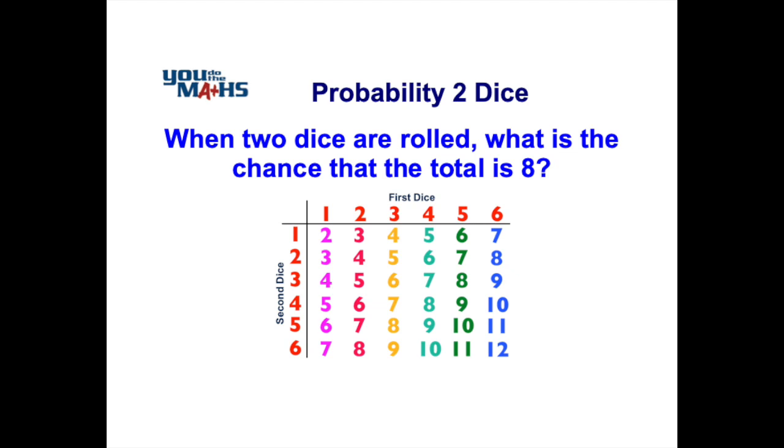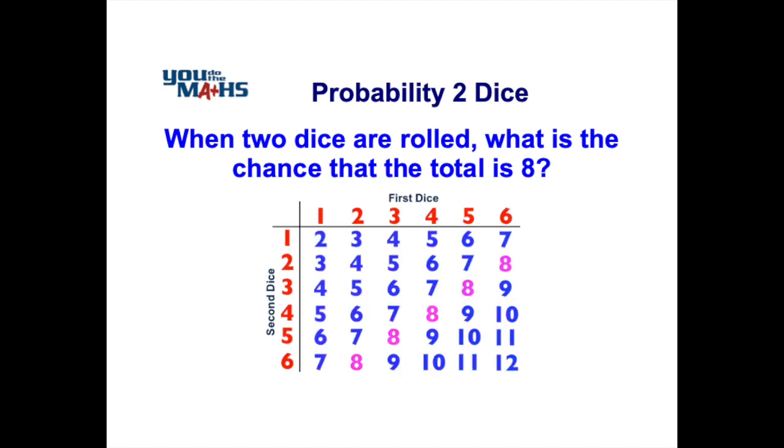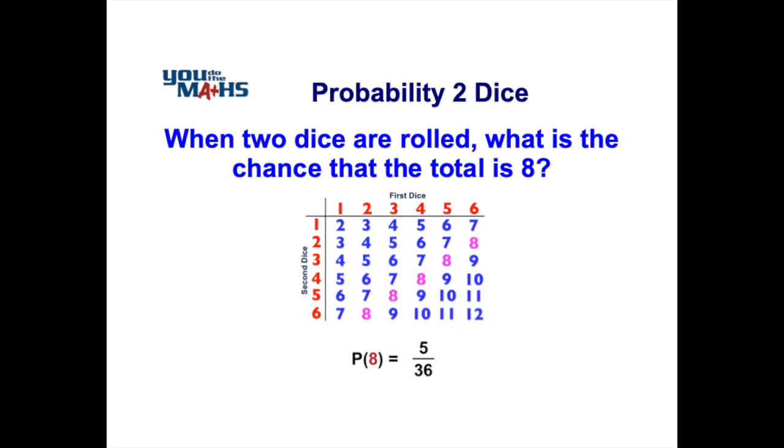Now that our table is complete and we can see all of the possible outcomes, in fact there are 36 of them, we can now work out the chance of getting a total of 8. Now we can see in the table here that there are 5 outcomes which result in 8, they're shown in pink, so that's 5 out of a total of 36 outcomes. So the chance or probability of scoring an 8 is 5 over 36.